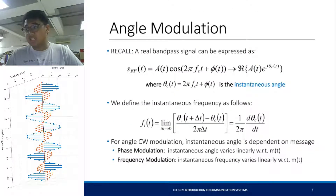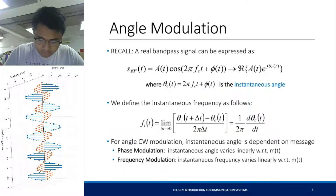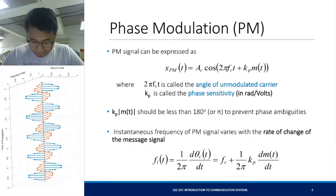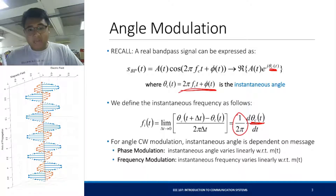So this is the expression we got earlier. Recall a real bandpass signal — we talked about this in the previous lecture — where phi_c of t is equal to this. We define the instantaneous frequency as follows: 1 over 2π times the derivative of θ_c. So for angle CW modulation, there are two types.